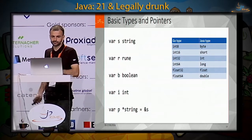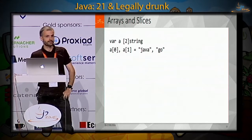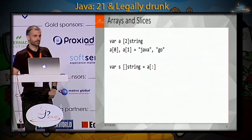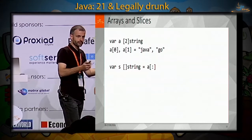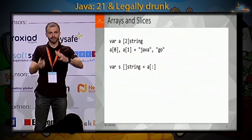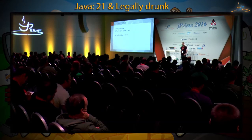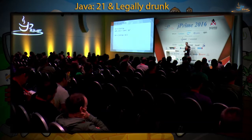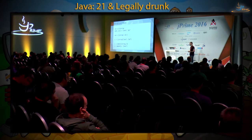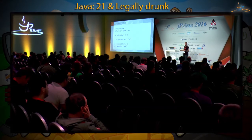Go has arrays, but the length of the array is part of its type, which makes them not really useful in practice. This is not a problem because Go also has slices — similar to ArrayLists in Java but built into the language. We can initialize a slice from an underlying array using the slice operator. A slice can be grown dynamically unlike the underlying array. We can create a slice with a slice literal, or use the built-in make function to create a slice with a certain length, and the built-in append function to append elements.